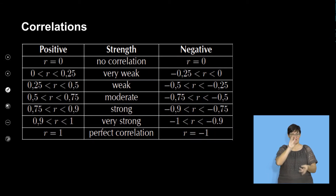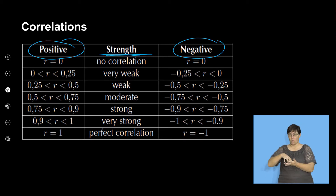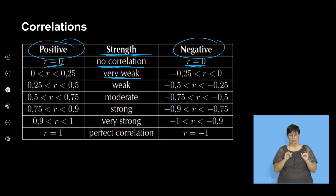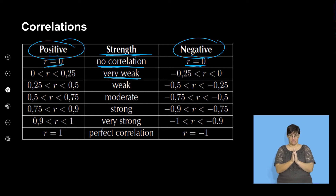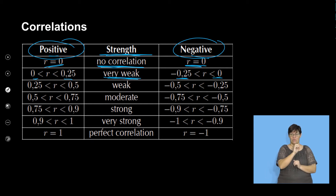Now let's look at our summary on correlation. We have positive correlation, negative correlation, and the strength of the correlation. No correlation is when correlation is 0. Very weak correlation — remember, it can be positive or negative — is from 0 to 0.25. And if it's negative, negative 0.25 to 0 will also be very weak correlation.